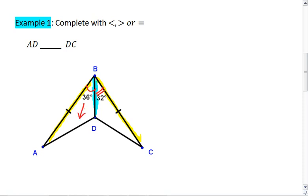Since 36 is larger, this means that AD must be greater than DC. We're going to use the greater than symbol.